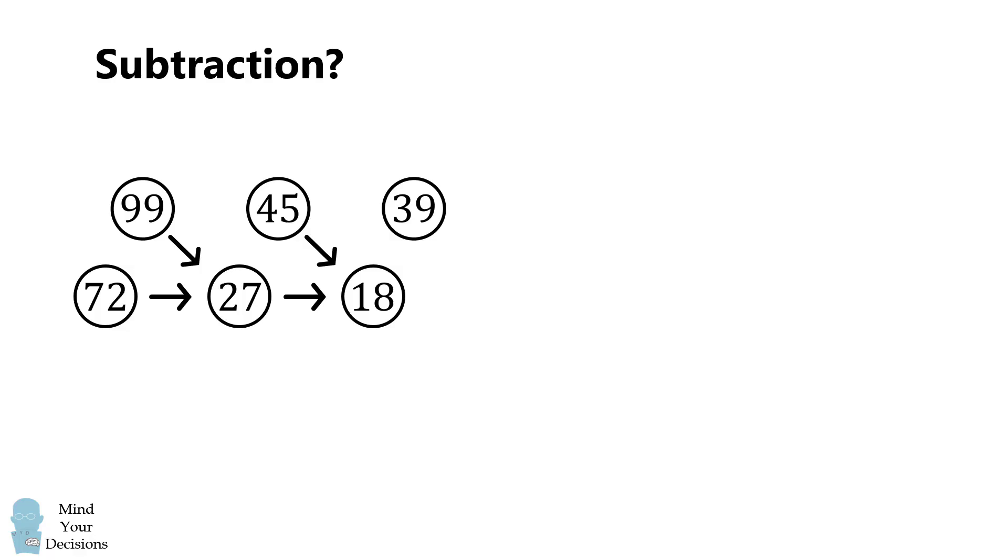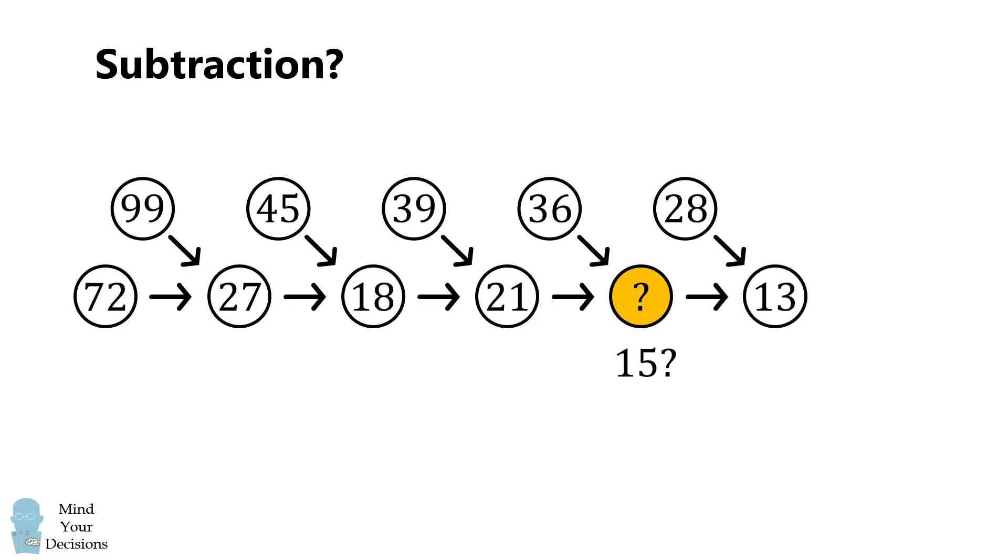If we continue, we can then see that 39 minus 18 is equal to 21. So we then would have 36 minus 21 would be equal to 15. If we then continue, we would see that 28 minus 15 is equal to 13. So finally, we would have 21 minus 13, and that should be equal to 8.